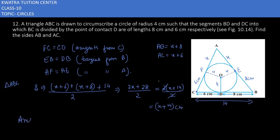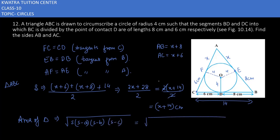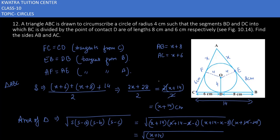Now we can find the area of triangle ABC using Heron's formula: Area = √(s · (s−a) · (s−b) · (s−c)). Substituting: s = x+14, s−a = x+14−(x+6) = 8, s−b = x+14−(x+8) = 6, s−c = x+14−14 = x. So the area equals √(x+14) · 8 · 6 · x.